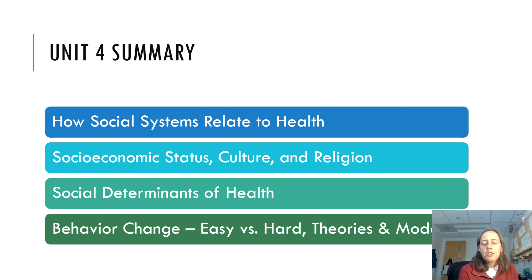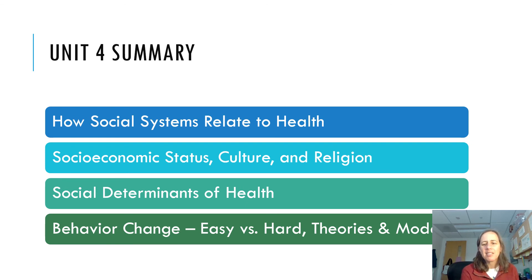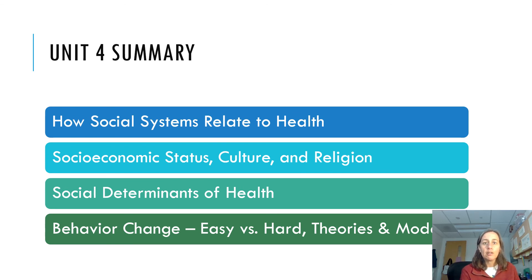So overall for this unit, what I want you to know about is how social systems relate to health, the impact of socioeconomic status both at the individual level and in terms of inequality present in your society, culture and religion, and the social determinants of health. There will be a lot of media assignments this week to help you delve into that further. And a little bit about behavior change — what makes it easy to change a behavior, what makes it harder, and knowing that there's a lot of different models out there and a lot of behavioral psychology that goes into helping people make healthier choices.